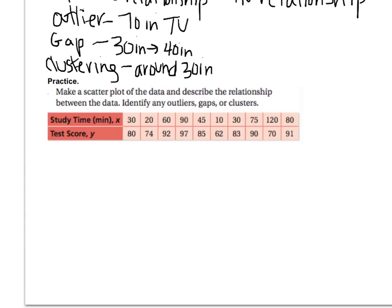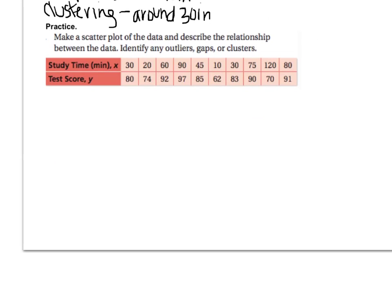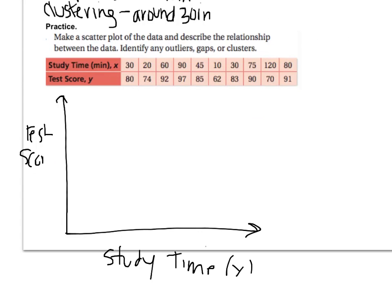I'd like you to get a piece of graph paper, because I want you to create me a scatter plot for this practice example. So you're not going to draw it here, but you're going to make me a scatter plot. I want labels. So this will be study time. And this will be test score. And you'll determine what scale you want to go by. And also identify any outliers, gaps, or clusters. So please come in with a graph for this example when I see you next.